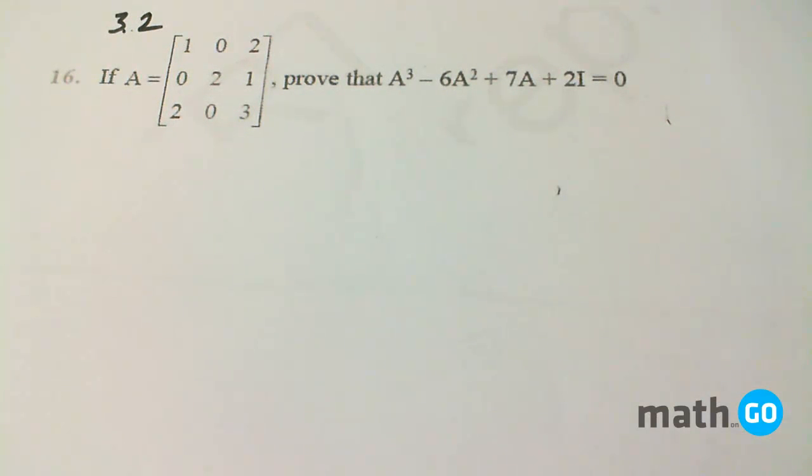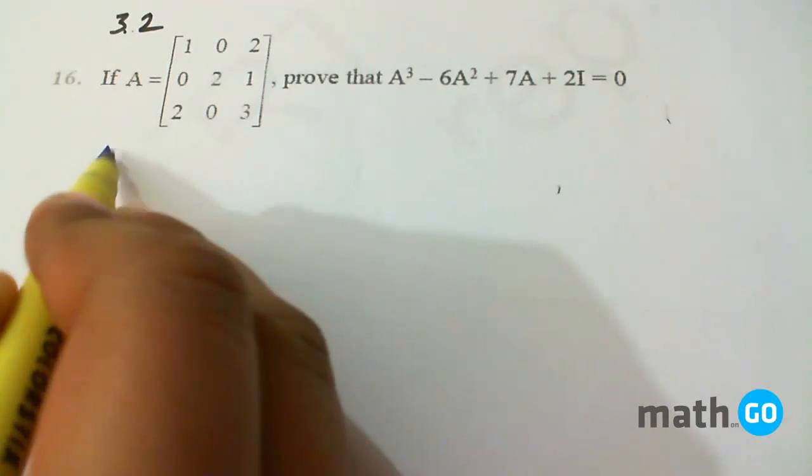Exercise 3.2, question number 60 says: if A is this matrix, prove that A³ - 6A² + 7A + 2I = 0. It is a very simple question with calculations here. So if A equals this matrix...